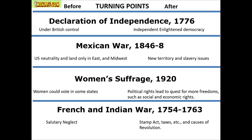In terms of turning points — looking at change before and after: the Declaration of Independence — beforehand we were under British control; afterwards you get enlightened democracy. The Mexican-American War changed U.S. neutrality as we began pursuing Manifest Destiny. Women's suffrage: women could vote in certain states, but by 1920 they gain full political rights. The French and Indian War ends salutary neglect, and then the British impose a lineage of taxes that gets the ball rolling for independence.